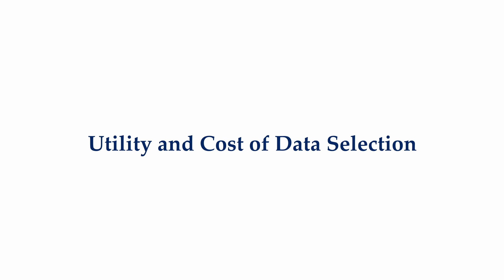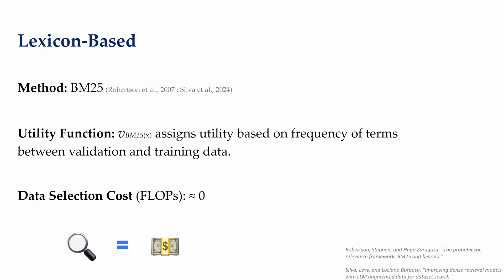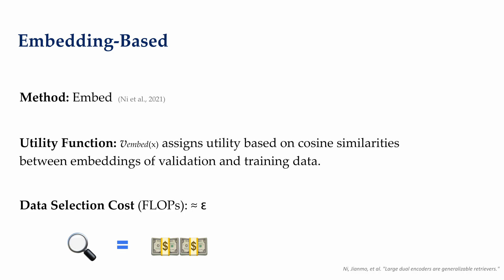Let's consider different data selection methods used in LLMs and their respective utility function and computational cost. The simplest is to perform data selection on the lexicon level through word matching. Here, we choose BM25 as a specific instance of this class of method. The utility function assigns utility based on the frequency of terms between validation and training data. Because of its simplicity, the compute needed for this method is practically zero.